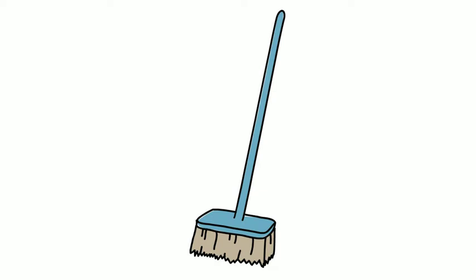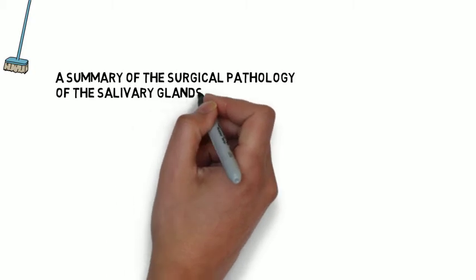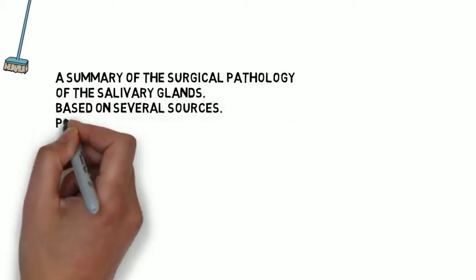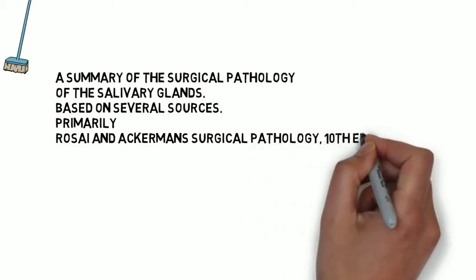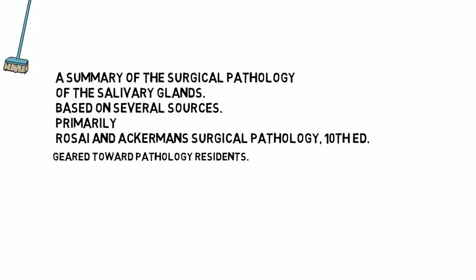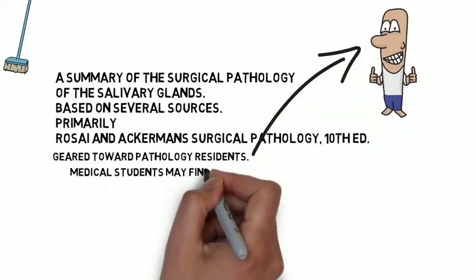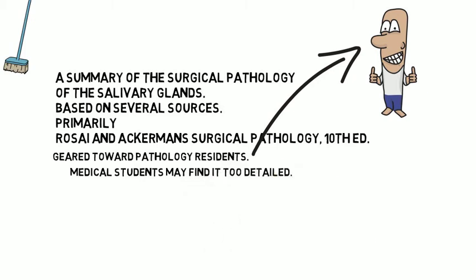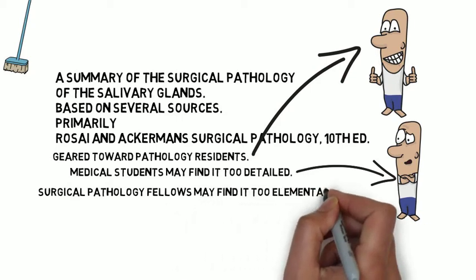First a few housekeeping items. This is a summary of the surgical pathology of the salivary glands — by no means comprehensive, but it is extensive, based on several sources, primarily Rosai and Ackerman Surgical Pathology. It's geared toward path residents. Medical students may find it too detailed, and surgical pathology fellows may find it too elementary.